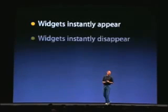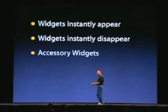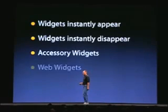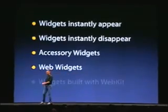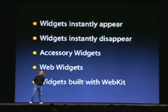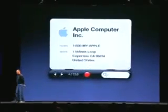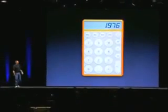In Dashboard, the widgets instantly appear and, just as importantly, they instantly disappear — because when you're done using them you want to get back to what you were doing. There are accessory widgets and widgets that go out on the web and find information for you, and they're all built using WebKit. Here are some high-res versions so you can see what they look like.